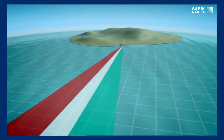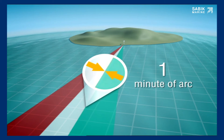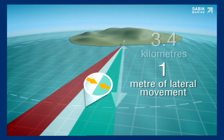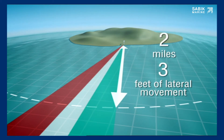The angle required for a complete colour change at a boundary is typically one minute of arc, or about one metre of lateral movement at a distance of 3.4 kilometres, or three feet at two miles. The placement of the boundary is just as accurate.